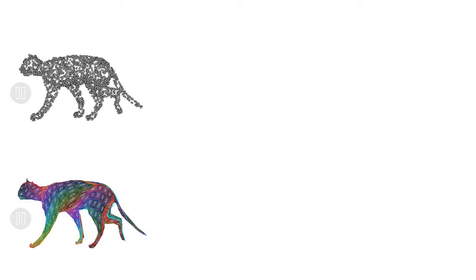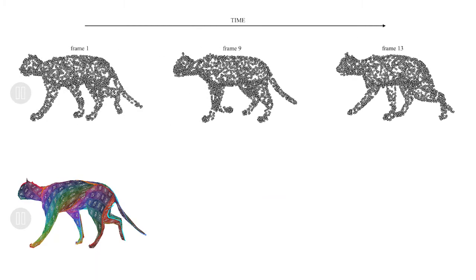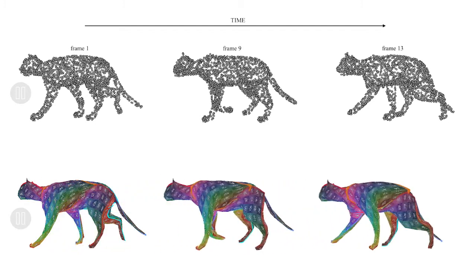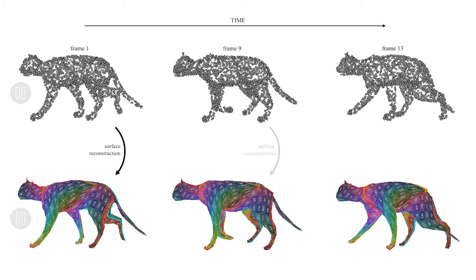Given as input a sequence of point clouds representing a shape moving over time, we aim to reconstruct one surface from each point cloud to get a sequence of surfaces. Besides yielding precise geometric reconstruction, our reconstruction is temporally coherent, meaning that the surfaces have a meaningful correspondence between them.